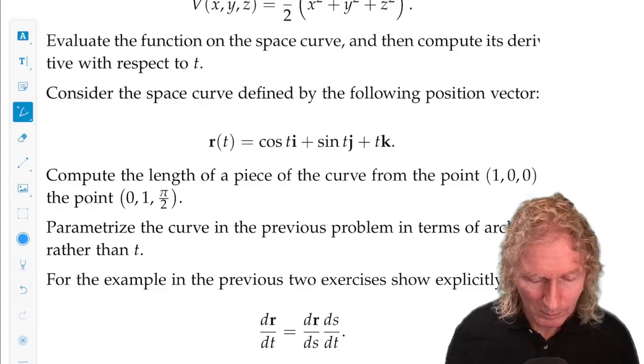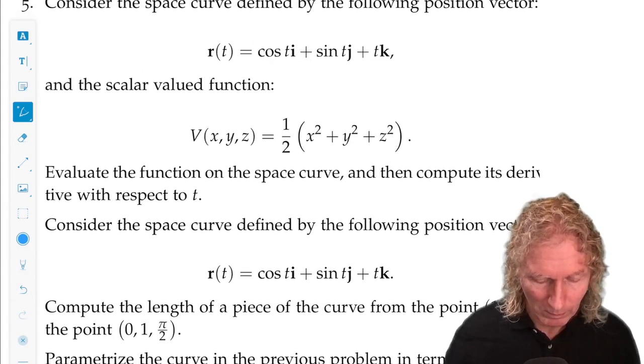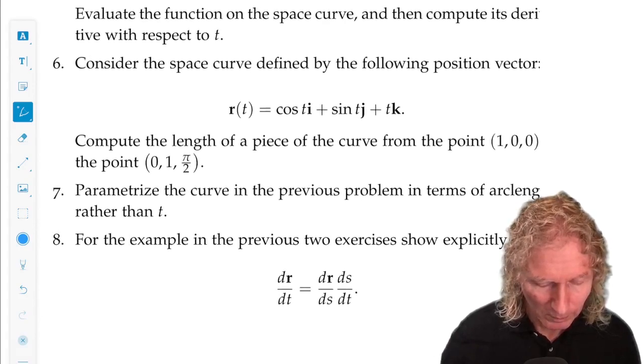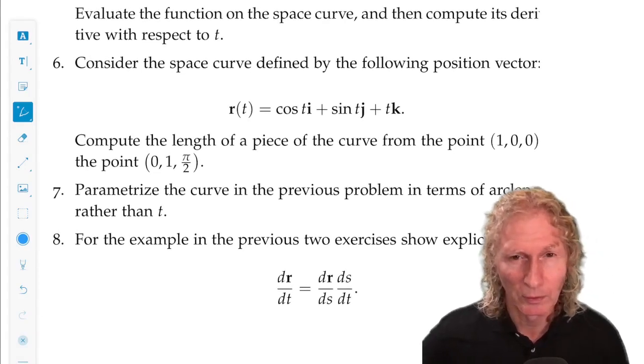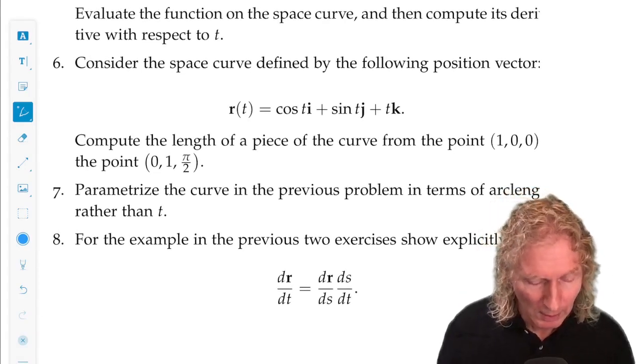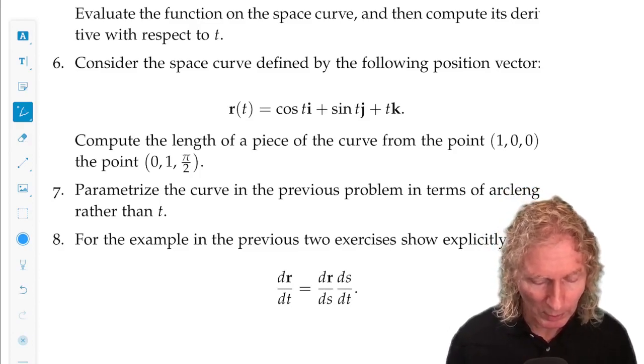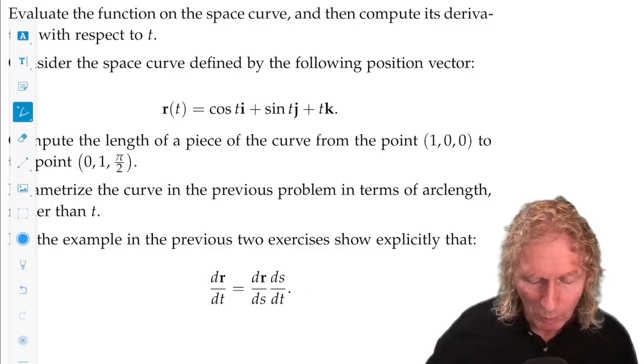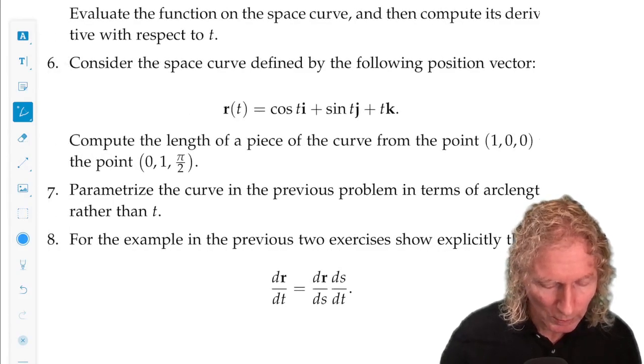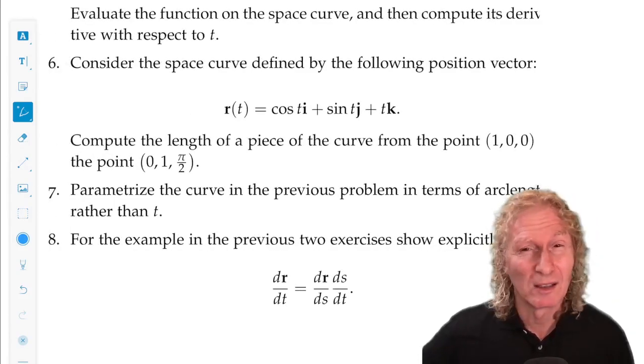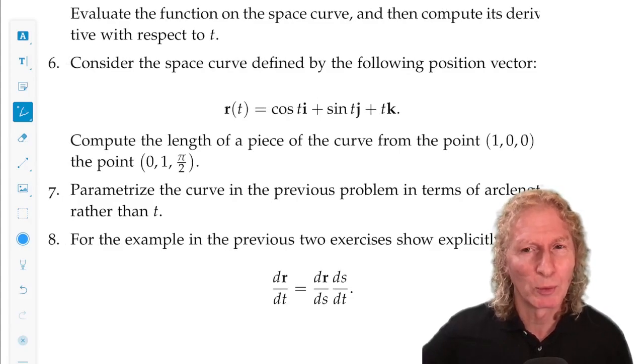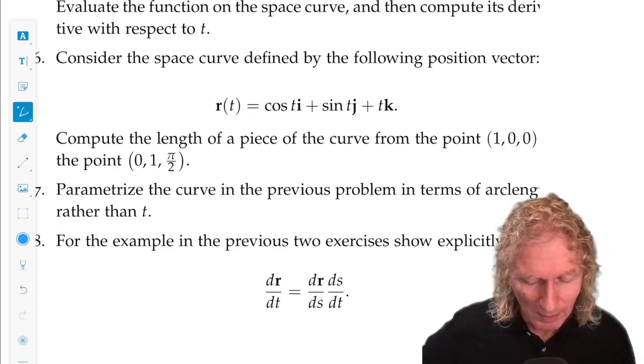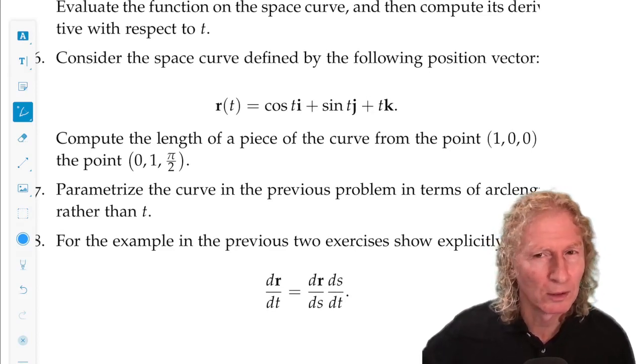With the same space curve, in fact the last three exercises are concerned with the same space curve, I want you to compute the length of a piece of the curve from the point 1, 0, 0 to 0, 1, pi over 2. I would first make sure those points are on the curve, or else it's not a very well-defined problem. And this looks like an arc length problem.